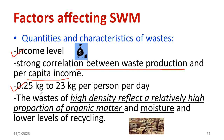Average waste generation per person is computed as 0.25 kg to 2.3 kg, depending on whether the person belongs to a high-income or lower-income group. Waste density reflects a relatively high proportion of organic matter and moisture content, and a lower level of recycling.